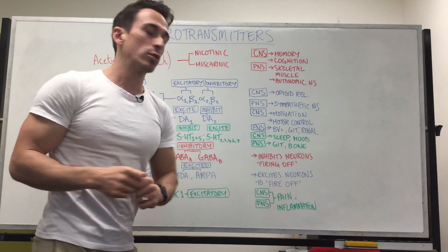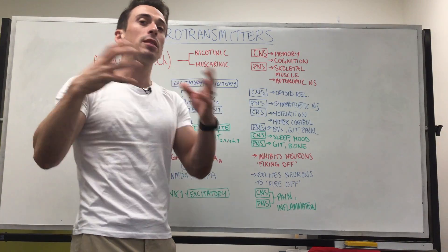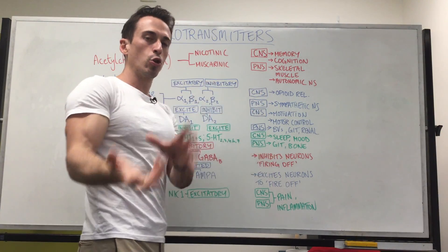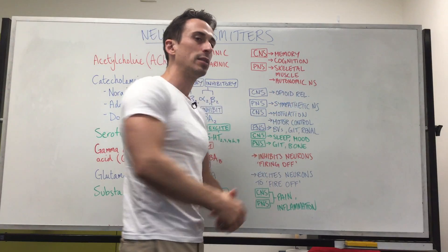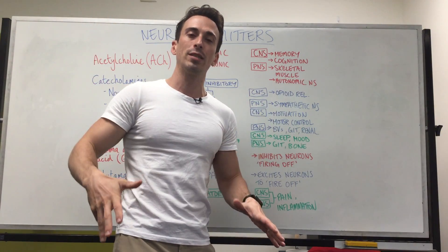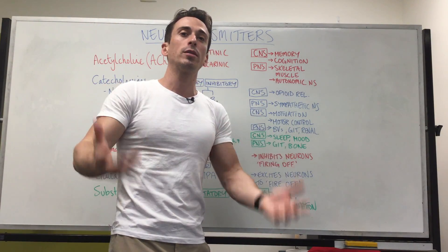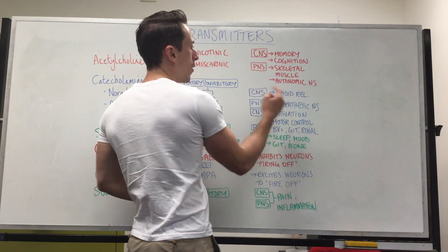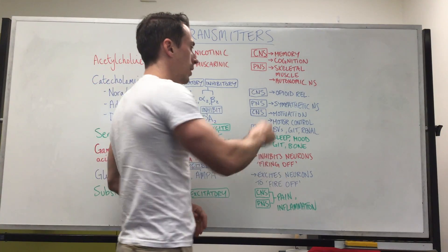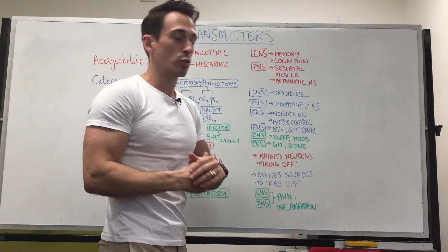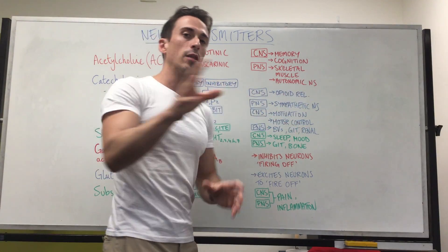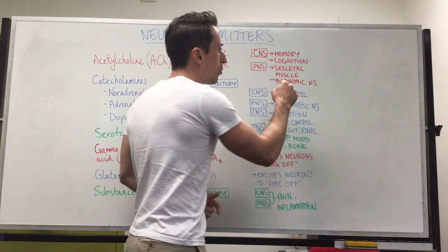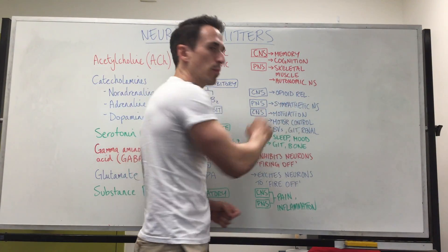Beta 2, found in our lungs, opens the airways up so more air can come in and out. In the central nervous system, adrenaline and noradrenaline are important for opioid release — our endogenous opioid system, which relaxes and reduces pain and anxiety. In the peripheral nervous system, noradrenaline and adrenaline are the primary neurotransmitters for the sympathetic nervous system. So acetylcholine is important for the parasympathetic, and noradrenaline is important for the sympathetic.